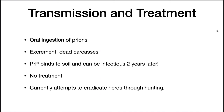The disease is transmitted by oral ingestion of prions. The prions are released in excrement and also in dead carcasses that rot and go into the soil. Insidiously, the PRP protein binds to soil and can be infectious up to two years later, so other deer grazing in the area will pick up this prion. There is no current treatment for the disease, and current attempts to eradicate it involve getting rid of infected animals through hunting — so far, that hasn't been very effective.